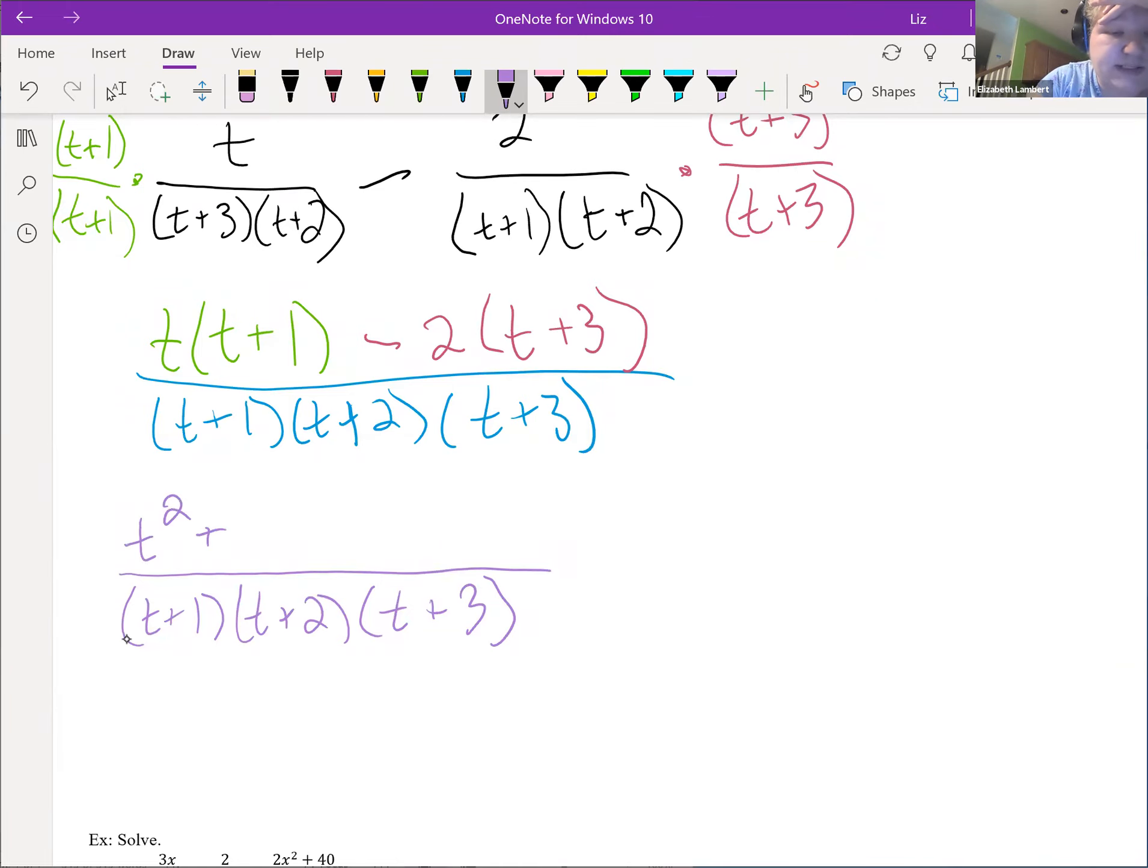So I am now going to take this off to the side, because this is going to factor. And that way, I don't have to keep writing the bottom. So that's going to be t squared minus t minus 6.